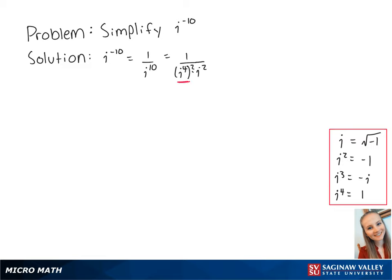Since i to the 4th power is equal to 1 and i squared is equal to negative 1, this equals 1 over 1 squared times negative 1, which is 1 over negative 1, which equals negative 1. This is the final answer.